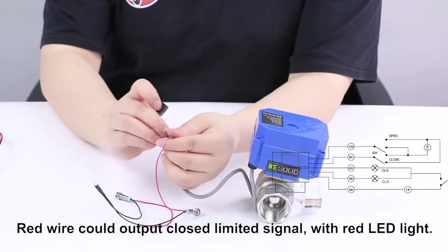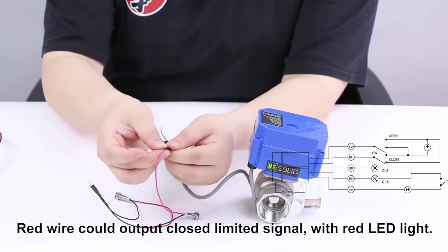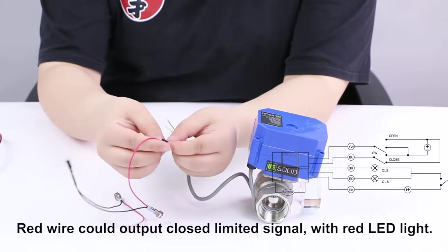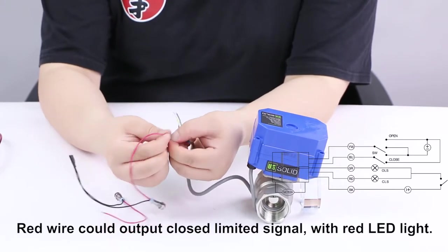We will use the red light to indicate the closed limited signal and the green light to indicate the open limited signal.